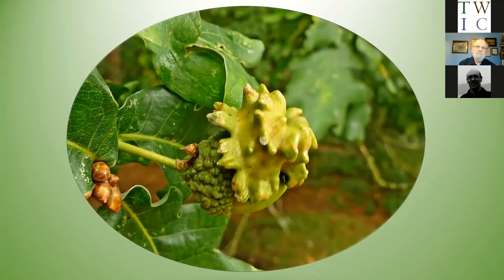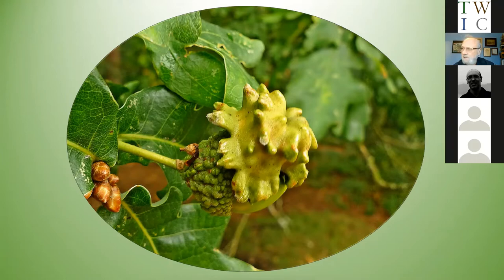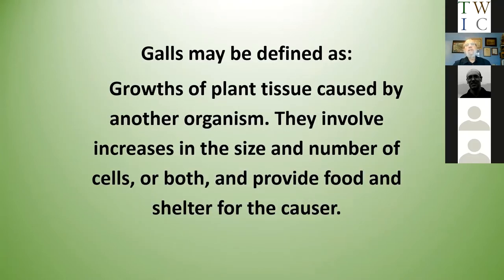This is something that might be familiar to you all in Scotland — it's one of our most prominent cynipid galls on oak. It's called the Knopper Gall, one of the ones that has a common name. The Knopper Gall forms between the acorn cup and the acorn: Andricus quercuscalicis. I'm sure you'll have that in your records, but what are galls?